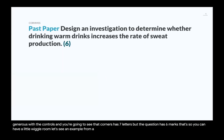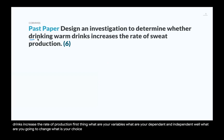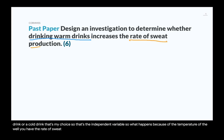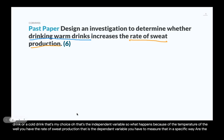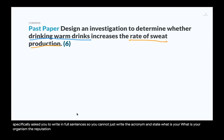Let's look at an example from a past paper: 'Design an investigation to determine whether drinking warm drinks increases the rate of sweat production.' What are your variables? What are you going to change? Your choice is giving the person a warm drink or a cold drink — that's the independent variable. The rate of sweat production is what happens because of the temperature of the drink — that's the dependent variable, and you have to measure it in a specific way. These questions ask you to write in full sentences, so you can't just list the acronym — you have to write a paragraph, but the acronym ensures you don't miss anything.